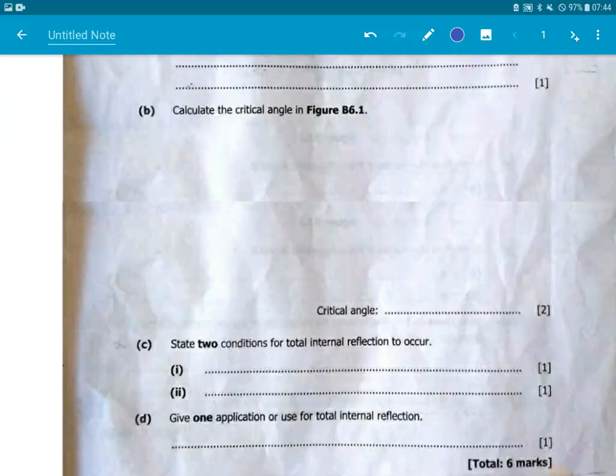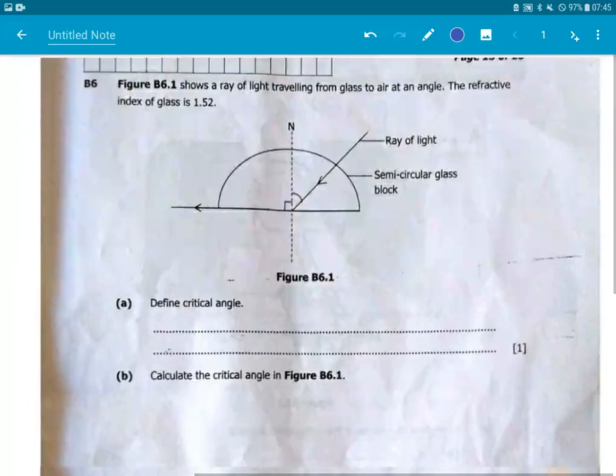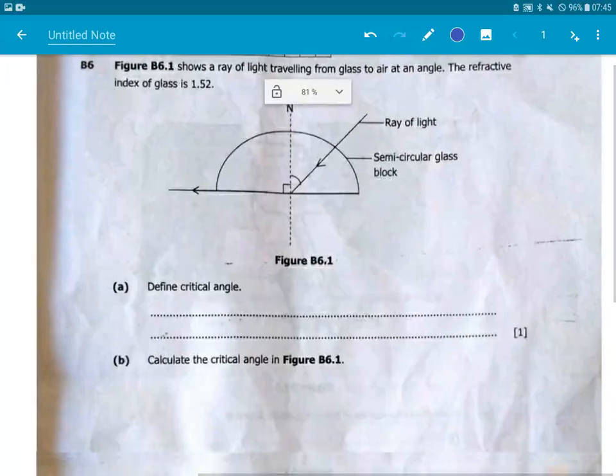The two conditions for total internal reflection to occur, give one application or use of total internal reflection. So what are we talking about? There are situations where when light strikes a medium, it doesn't emerge or move out, but it bounces back within the same medium. We call it total internal reflection. Now, this comes in contact with a critical angle.